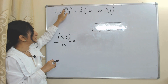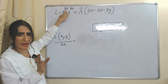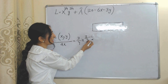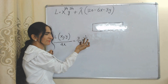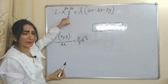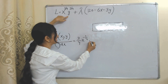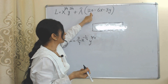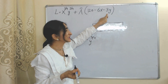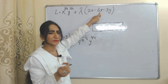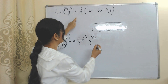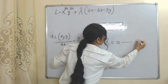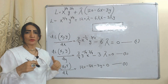First, we do the partial derivative with respect to x. As we know, when we differentiate, this power comes in front of the variable and we subtract 1 from the power. Subtracting 1 from 3/4 gives minus 1/4. Since we are differentiating with respect to x only, y remains as is. There is no x in 120 or in 3y, so those terms become zero. The derivative of 6x is 6, and 6 multiplied by lambda becomes minus 6 lambda. This is our first equation, set equal to zero.